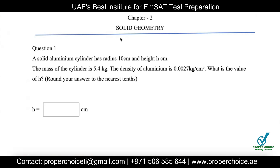Please do like, share, and subscribe to my channel, and click on the bell icon so that whenever I upload a new video you will be notified. Let's start with chapter two — solid geometry. Question number one says: a solid aluminum cylinder has a radius of 10 centimeters and a height of h centimeters.